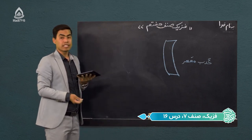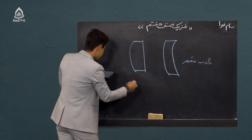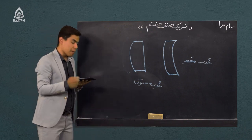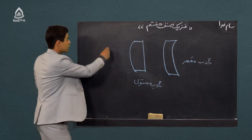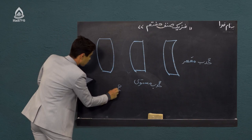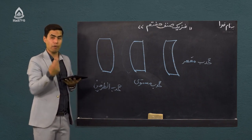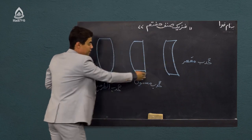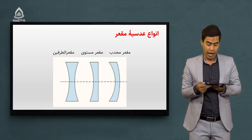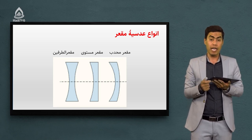نوع دیگر عدسیه محدب مستوی است. توجه کنید: یه قسمت عدسیه صاف است و اینجا ما یک برآمدگی داریم. پس این می‌شه محدب مستوی. نوع دیگر عدسیه محدب دوطرفه است، یعنی از هر دو طرف محدب است. ما با سه نوع از عدسیه‌های محدب آشنا شدیم: محدب مقعر، محدب مستوی، و محدب دوطرفه. انواع عدسیه‌های مقعر هم مثل عدسیه‌های محدب سه نوع داریم: مقعر محدب، مقعر مستوی، و مقعر دوطرفه.